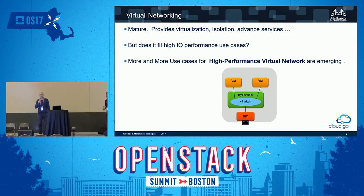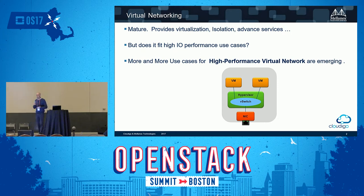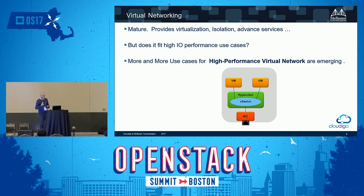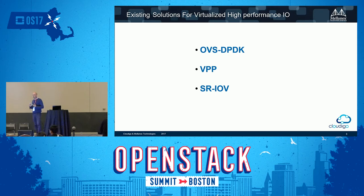We'll start with virtual networking today. When we look at virtual networking today, it's mostly been implemented using a software switch in the hypervisor. This software switch provides switching, but it provides much more. Most virtual switches provide some programmability — OpenFlow, P4, and others — and we are able today to provide virtual services and advanced virtual services in the hypervisor using the virtual switch. But does it fit high-performance virtual networking? When we talk about high performance, we mean 25, 40, and even 100 gig networking. The answer, not only by us but by others as well, is that it doesn't fit.